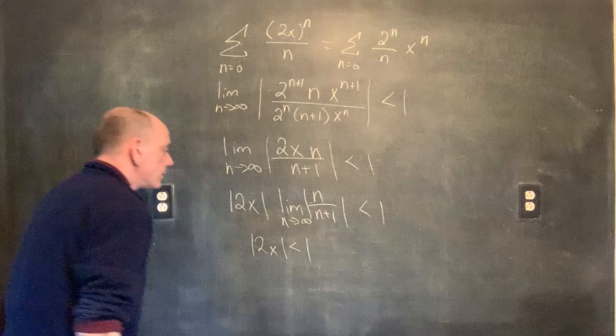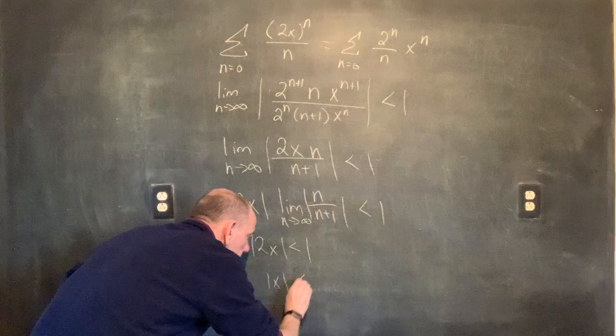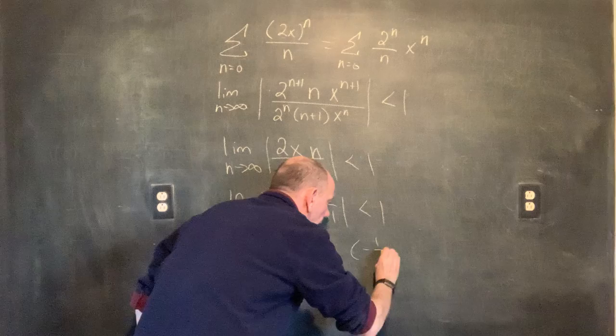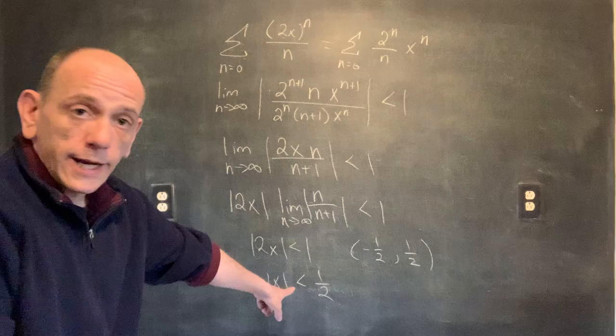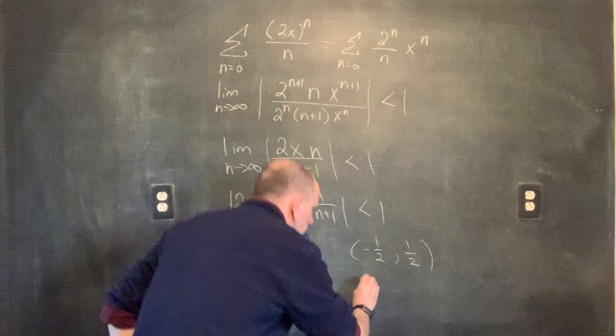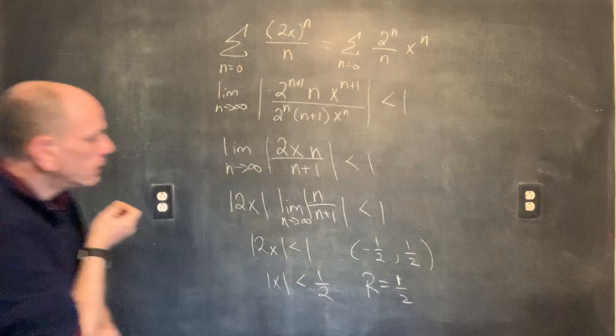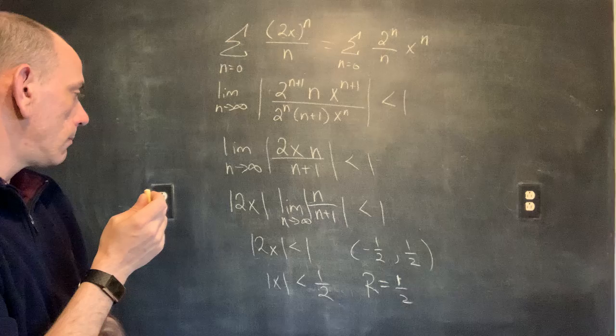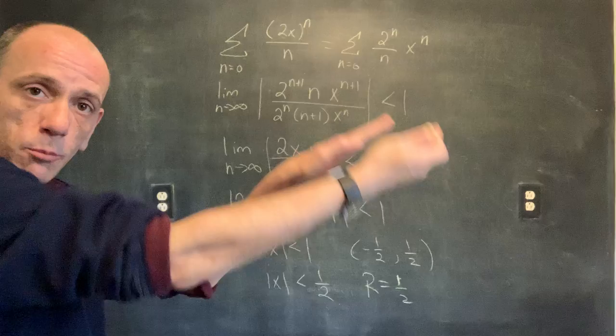So the absolute value of 2x must be strictly less than 1, which means the absolute value of x is strictly less than 1/2. Which gives us the interval from negative 1/2 to 1/2. The radius is 1/2, centered around 0 — negative 1/2 on one side, positive 1/2 on the other.